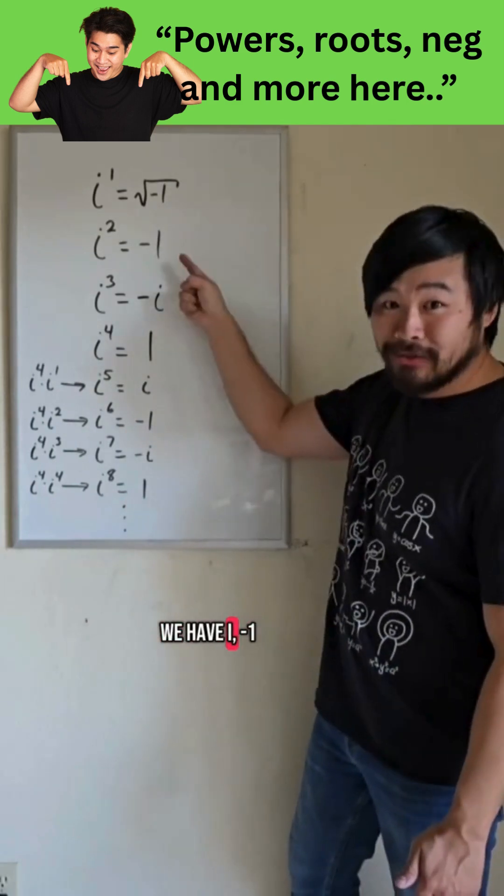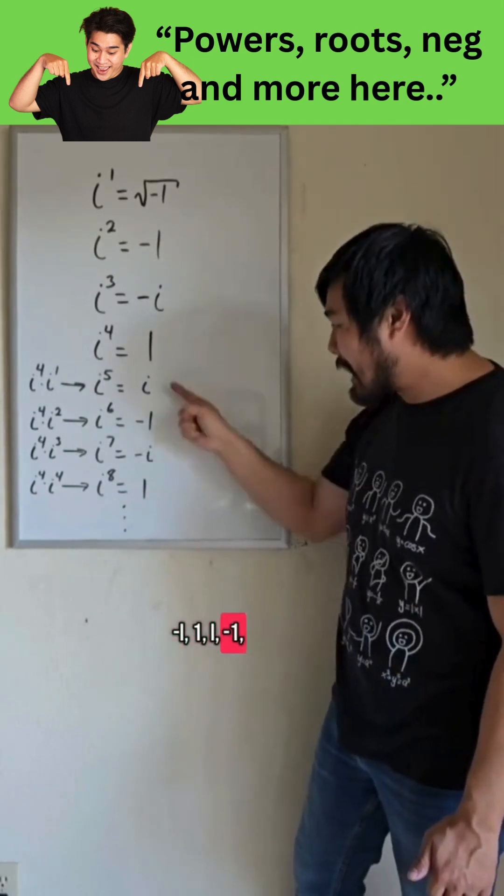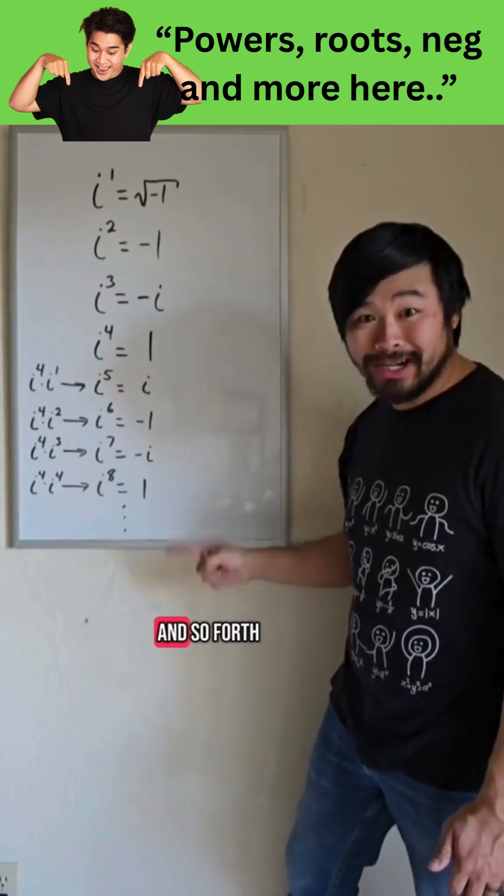We have i, negative 1, negative i, 1. i, negative 1, negative i, 1, and so forth.